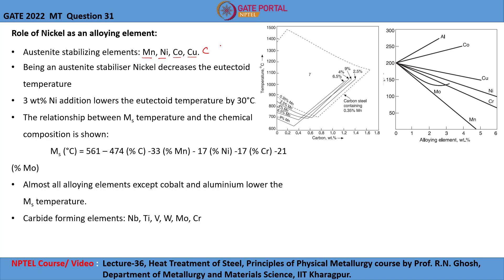These elements enlarge the austenitic region and make it stable even at room temperature. One example shown here is the effect of adding an FCC element — manganese — on the austenitic phase region. Adding more and more manganese causes both the eutectoid temperature and the eutectoid composition to decrease, which means the austenitic phase is formed at further lower temperatures on adding austenite stabilizers.